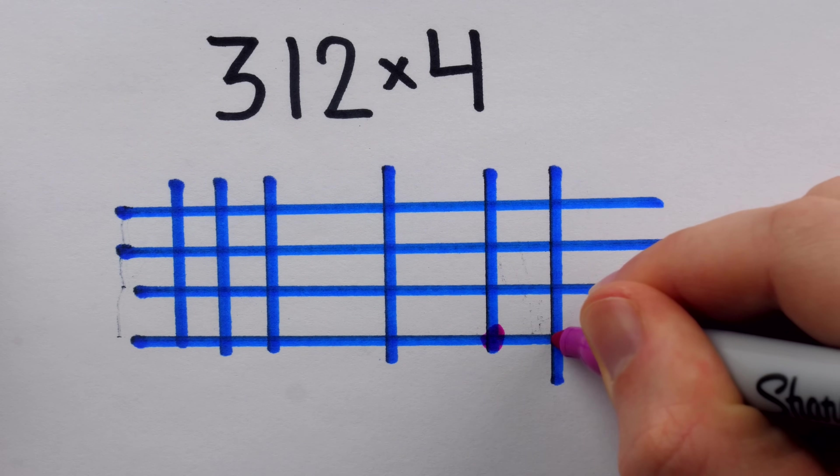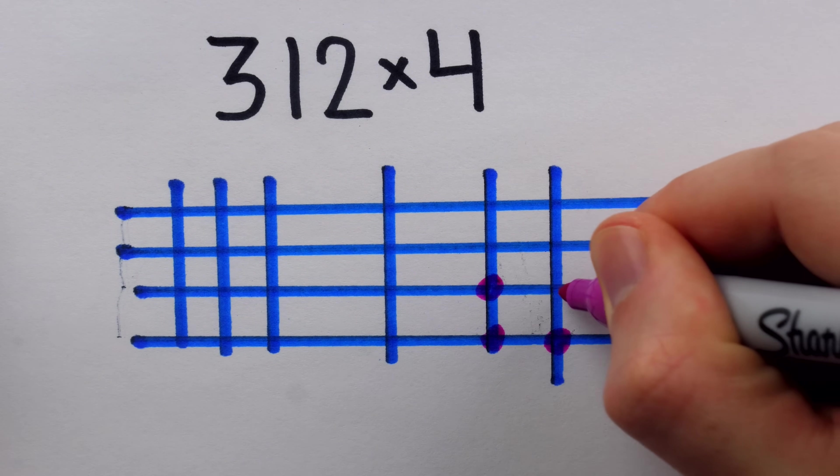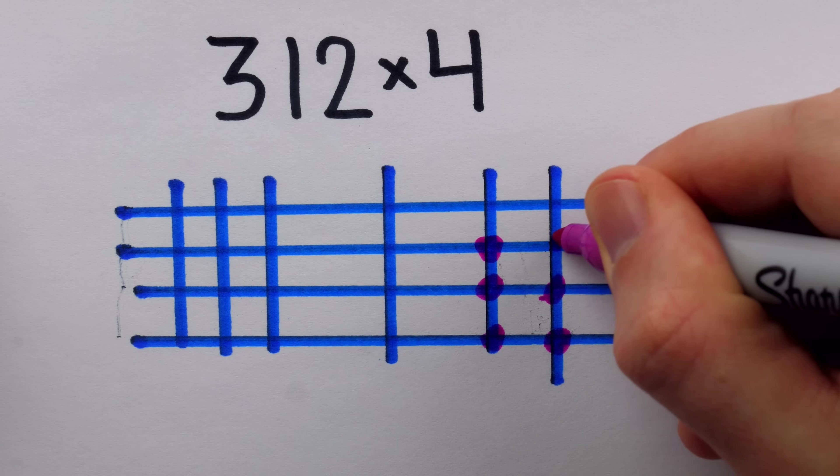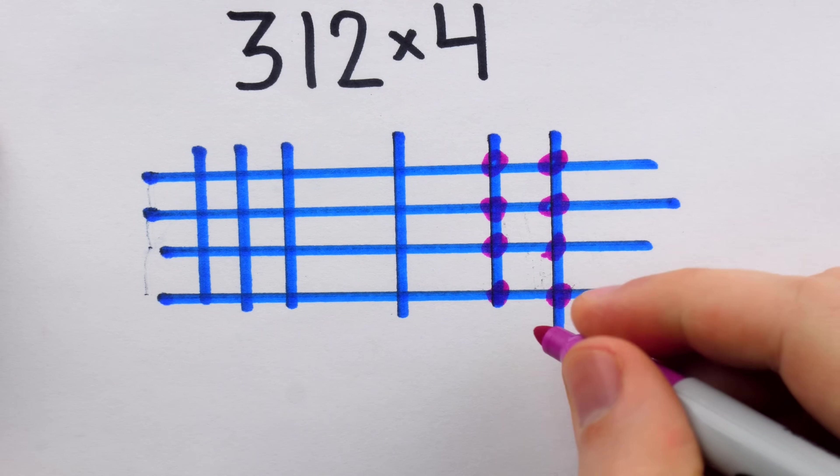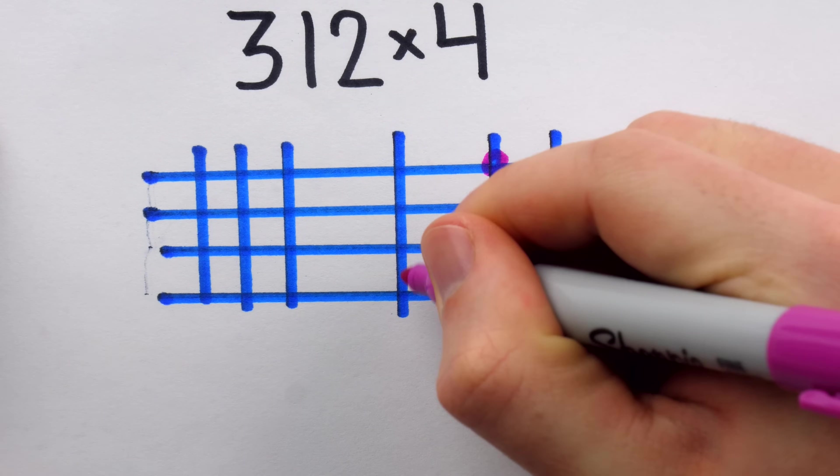After doing this, the young lad basically just counted off the answer by looking at the intersections of the lines. Eight intersections there gives us an eight in the ones place.